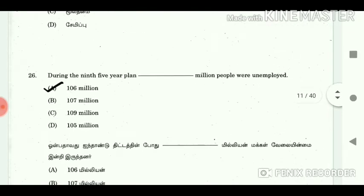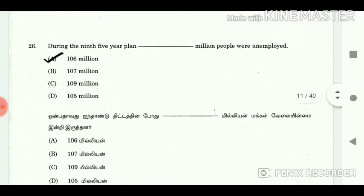26. During the 9th Five-Year Plan, how many million people were unemployed? Answer: 106 million.